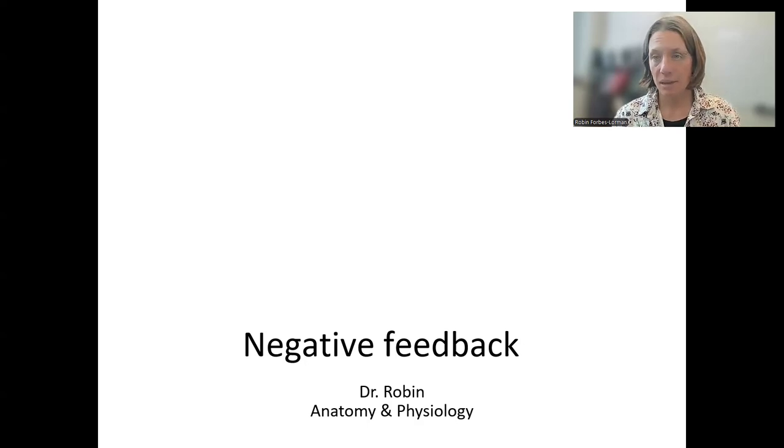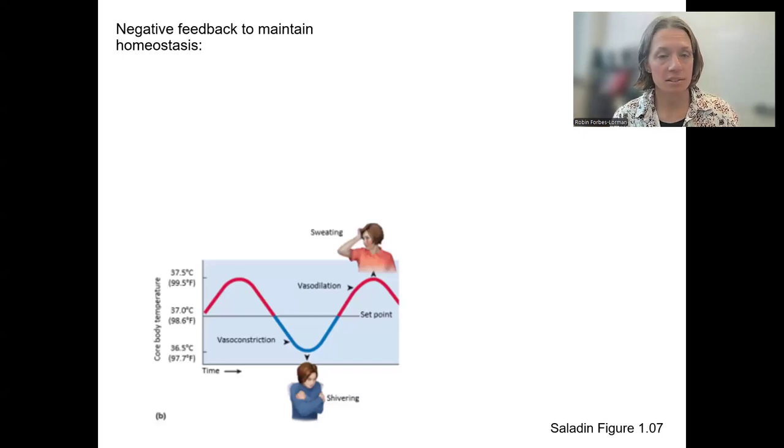In order to have a negative feedback system, we need to be able to detect changes in our system, decide whether we need to respond to those changes, and then actually respond. That's three basic components that we'll see more formalized in just a minute here. So negative feedback, again, is used to maintain homeostasis.